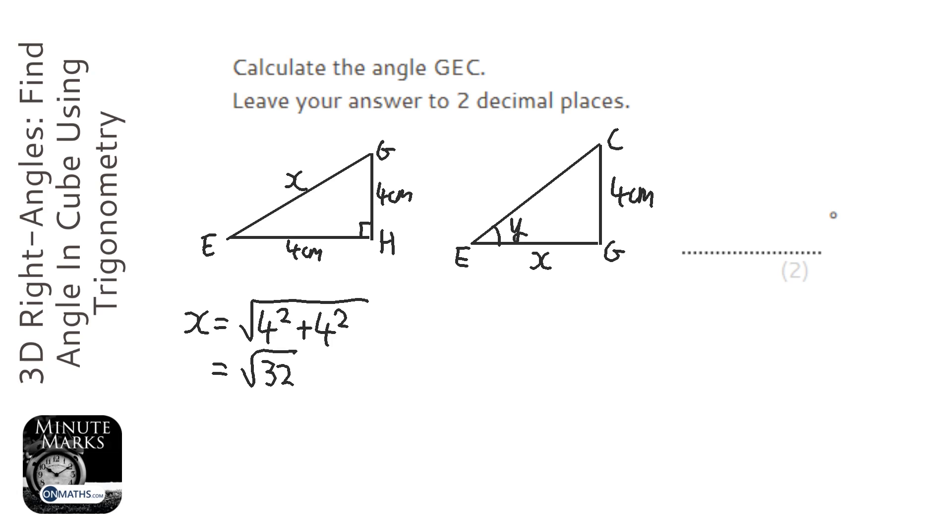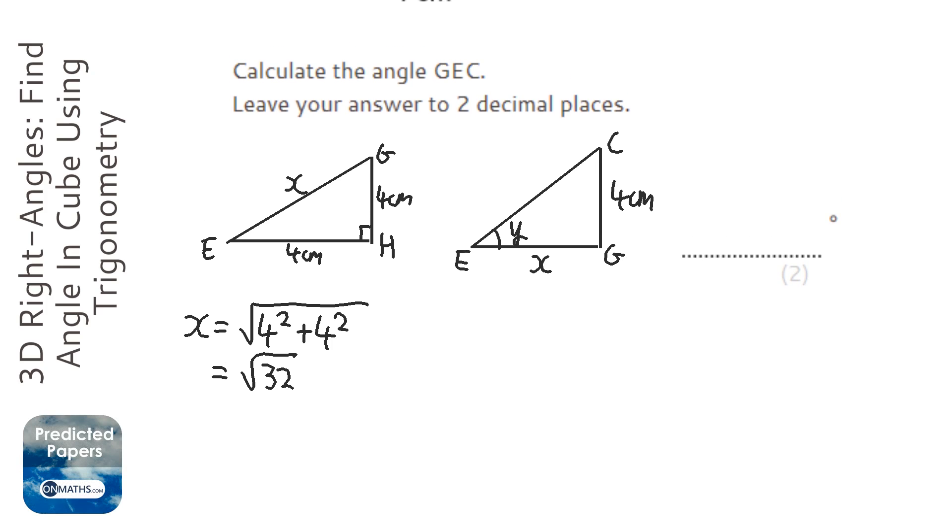Because we know x is root 32, we can substitute that in. We're going to use trigonometry, specifically tan. If you don't know Pythagoras' theorem or trigonometry, there's loads of stuff on the site. It's going to be tan y equals the opposite, which is 4 over root 32.